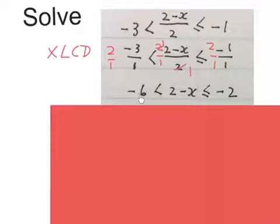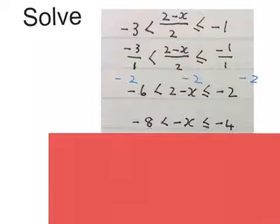On this side, you'll have 2 times minus 3 is minus 6. Keep the sign. This will just stay 2 minus x, because the bottom is gone. 2 times minus 1 is minus 2. This stayed, this stayed.